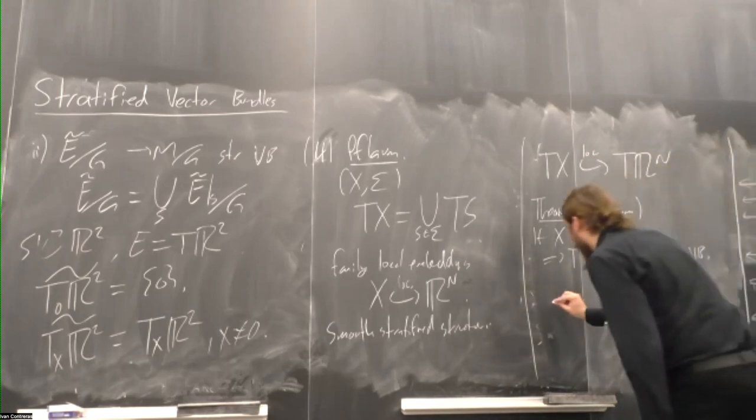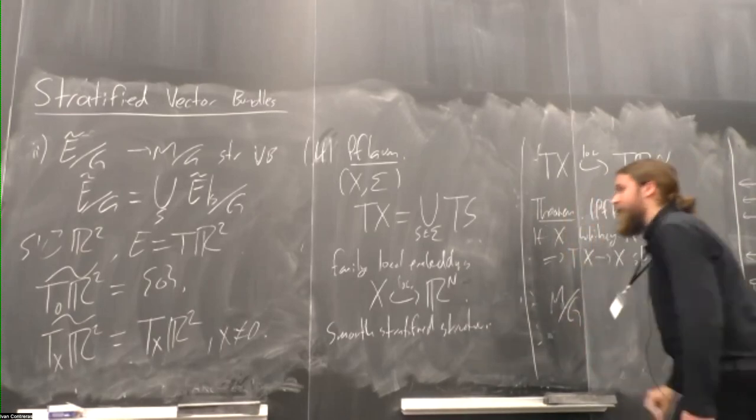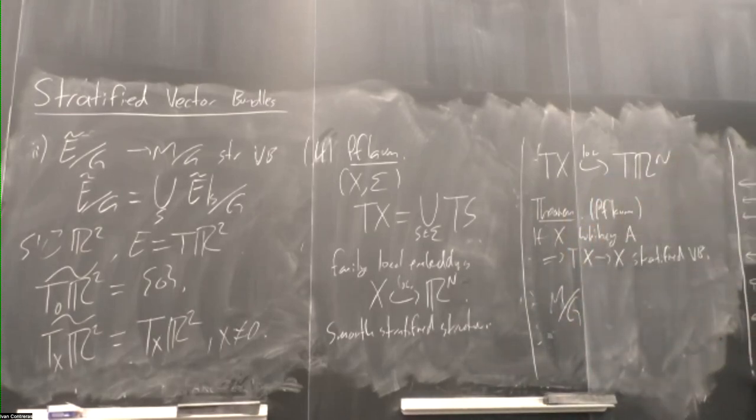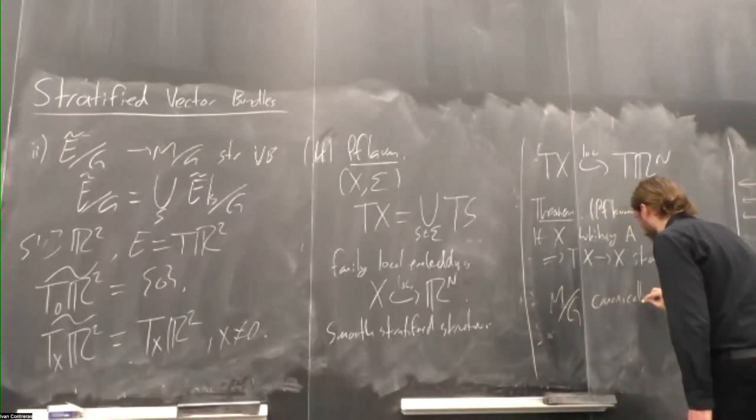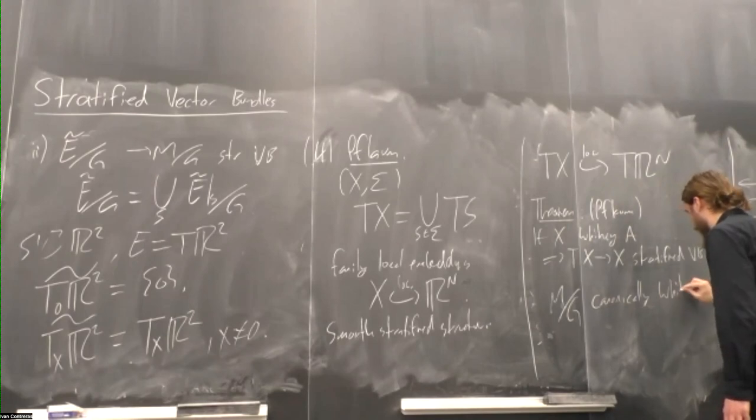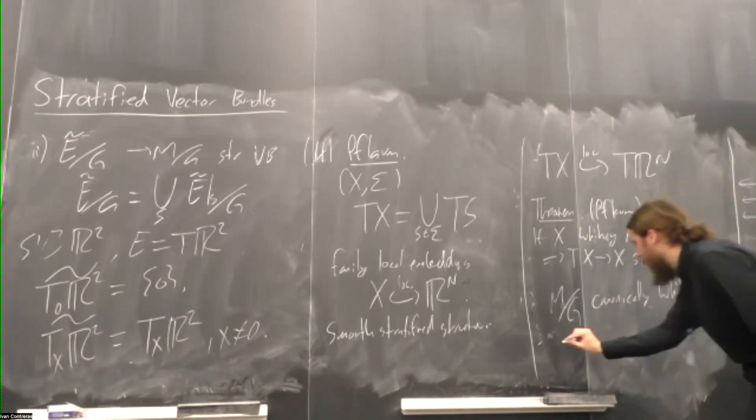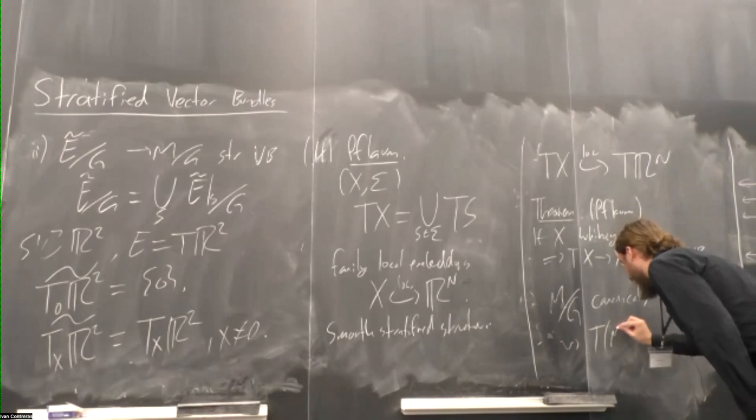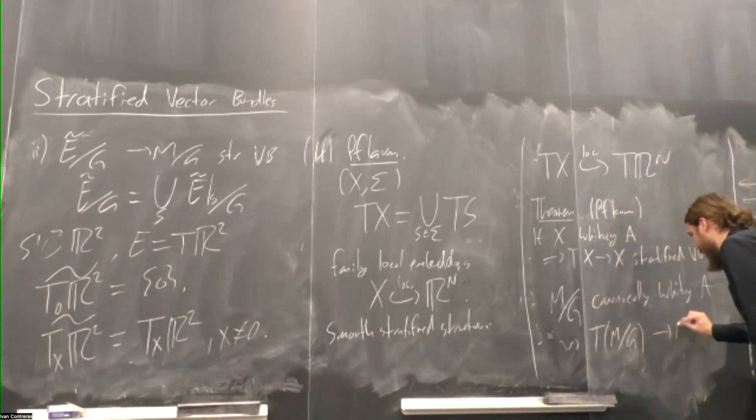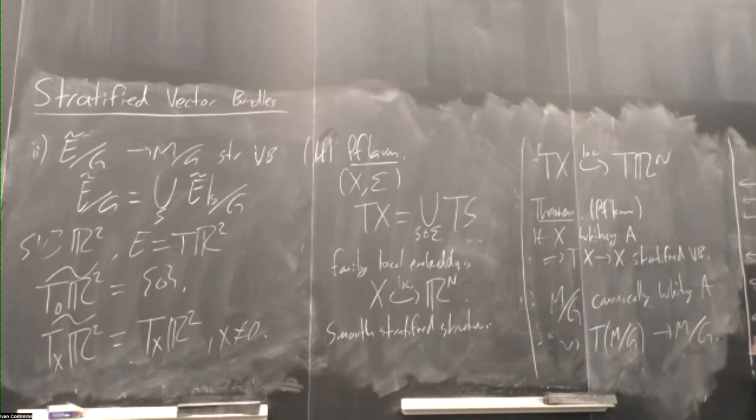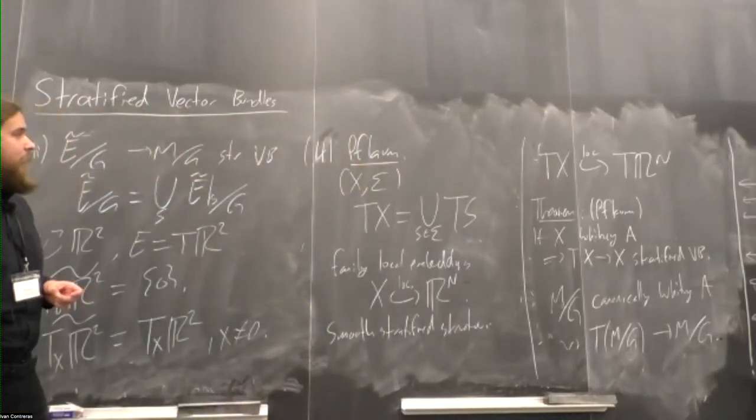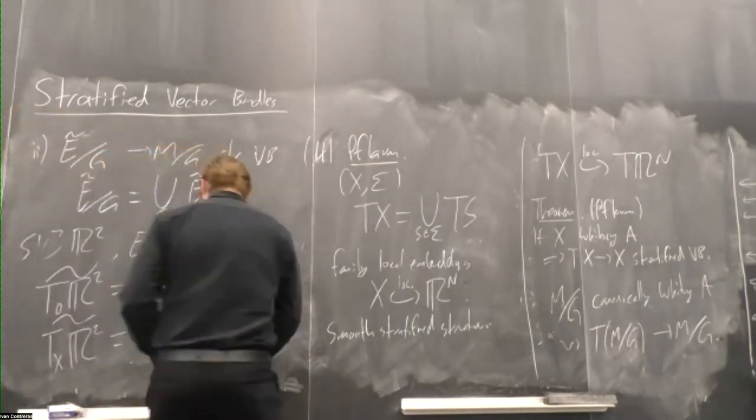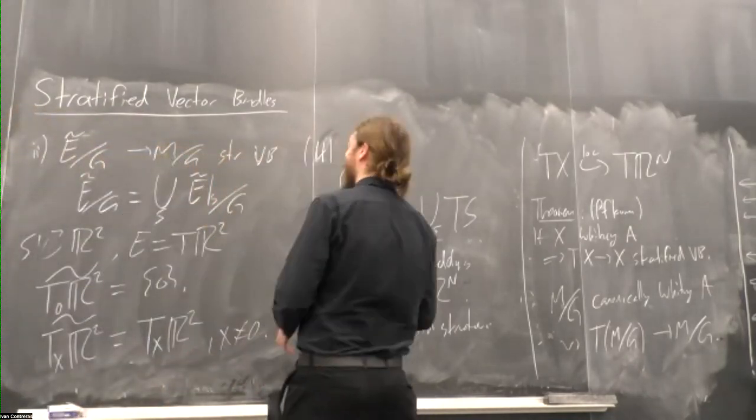And, importantly, these spaces that we were just considering, these quotients by compact group actions, these are canonically Whitney A. So they also have a stratified tangent bundle. Now, looking at that thing I just did right here, you may wonder, do they give me the same answer? And the answer is, no, they do not. They are different.